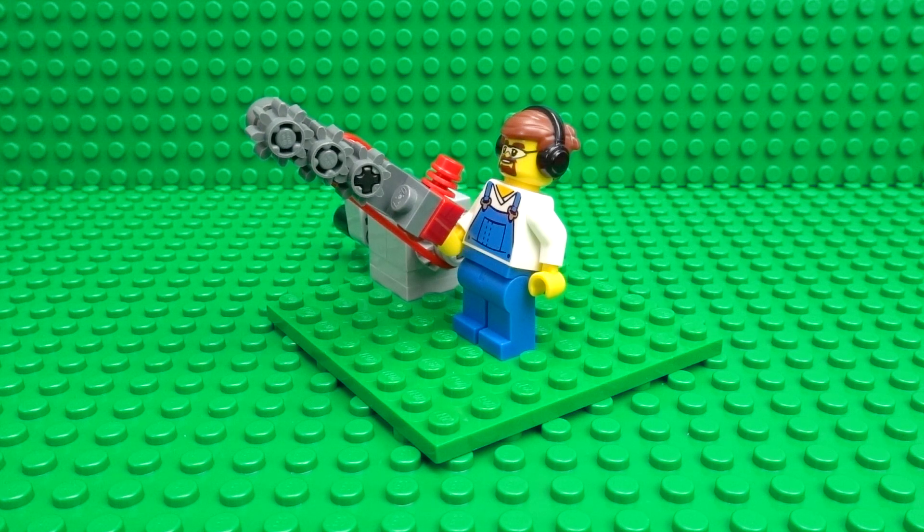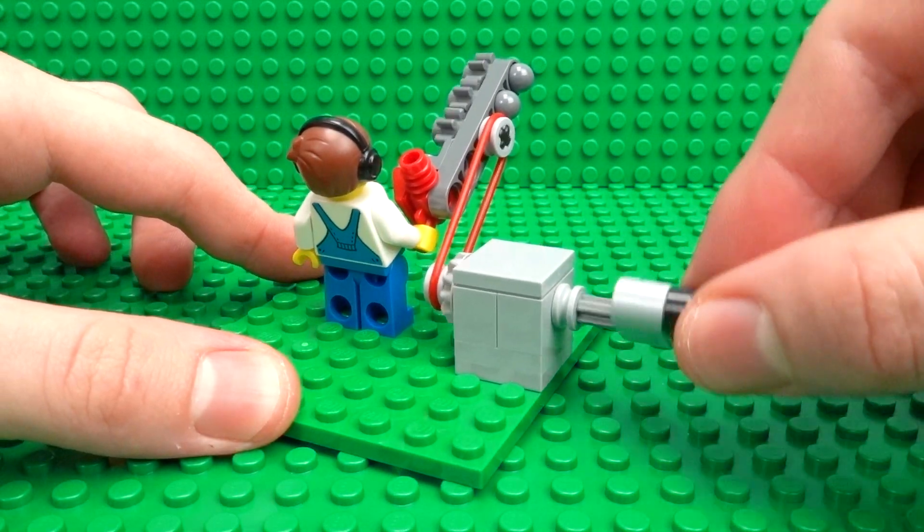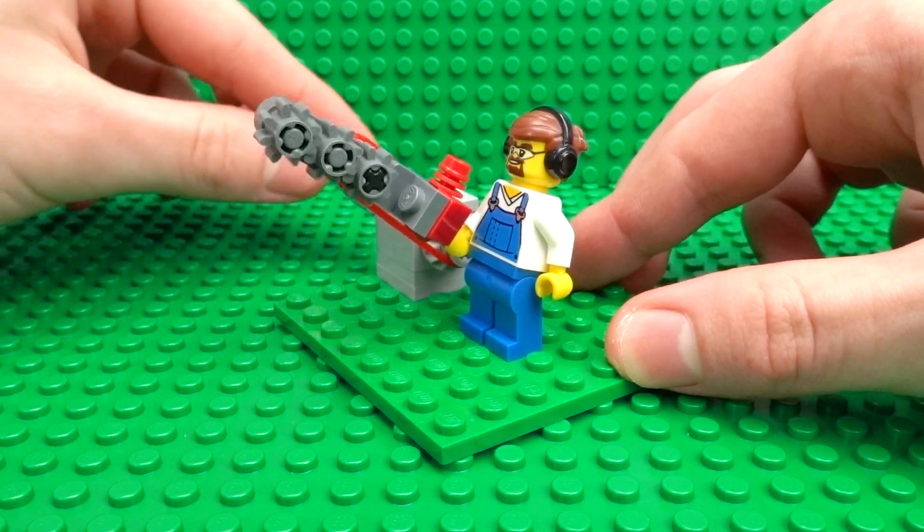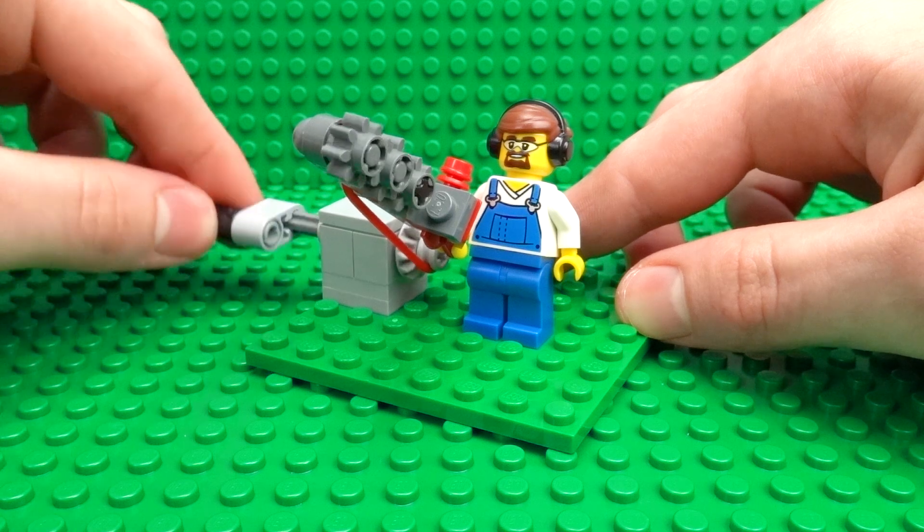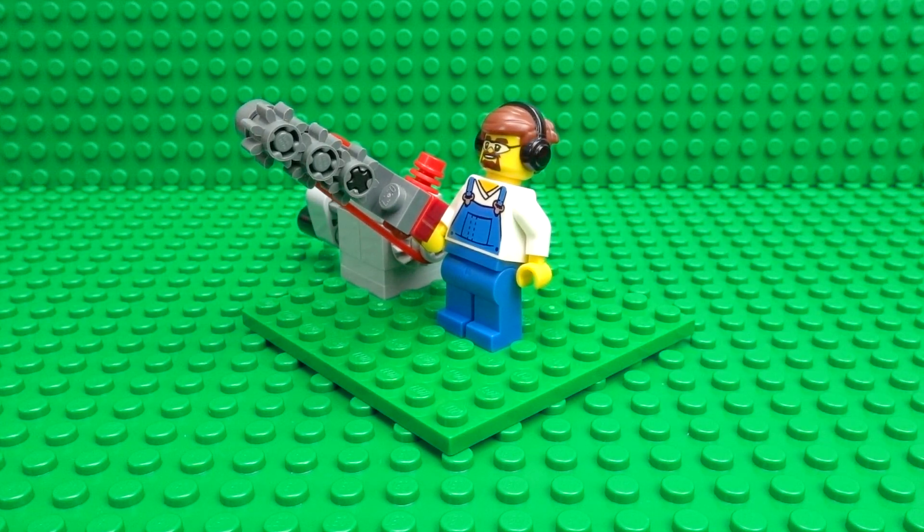And in case you don't have this special wind-up motor, I'll also show you how to build an alternative version made out of much more common pieces and a couple of Technic bricks. While this isn't as fast as the wind-up motor, it still produces a really awesome effect. So let's get started and take a look at all of the pieces you're going to need to build it.